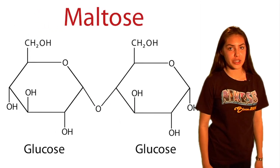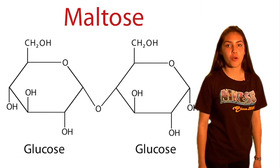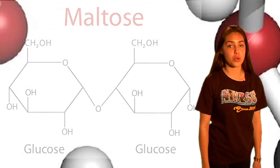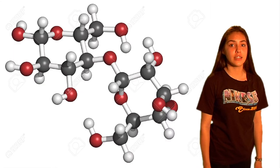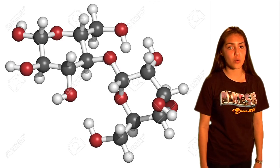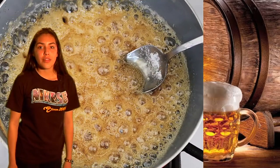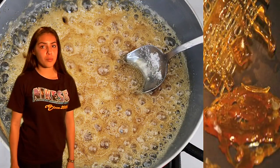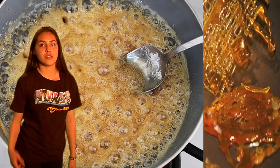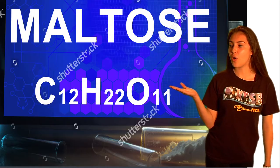Maltose is known as malt sugar. It is a disaccharide formed from two units of glucose joined with a bond. Maltose is a sugar not naturally found in high quantities in the food supply. It is also produced when glucose is caramelized. The chemical formula of maltose is C12H22O11.